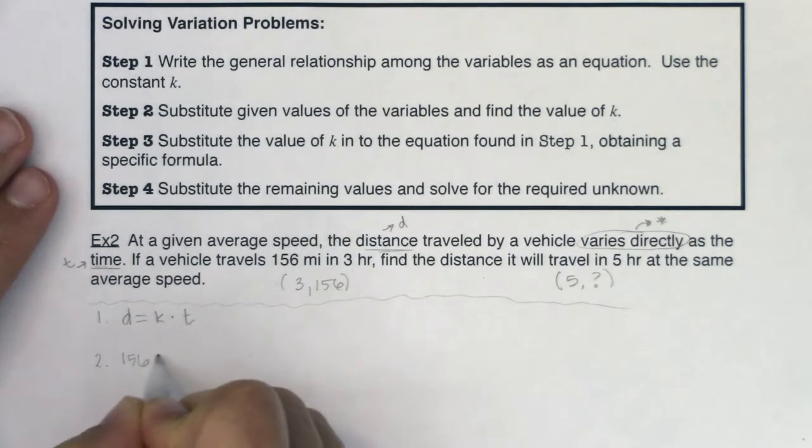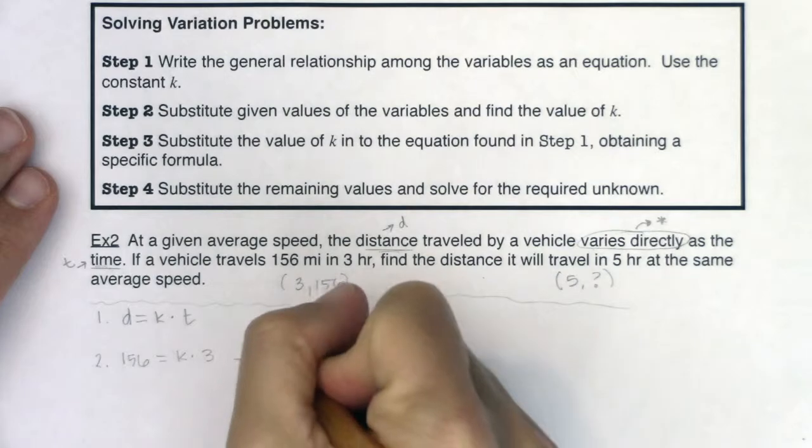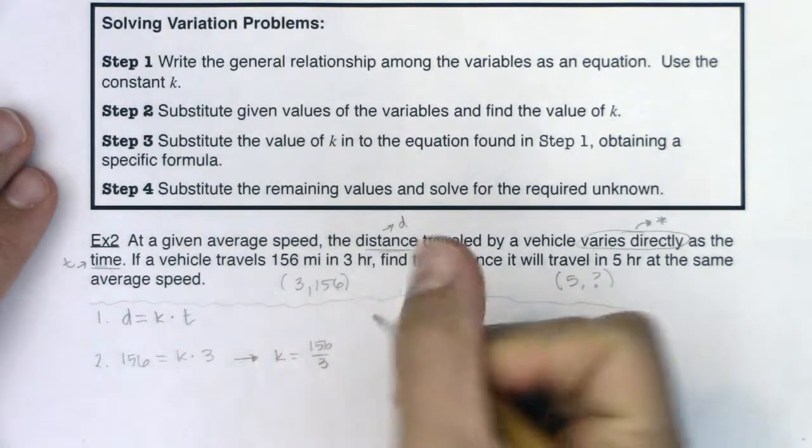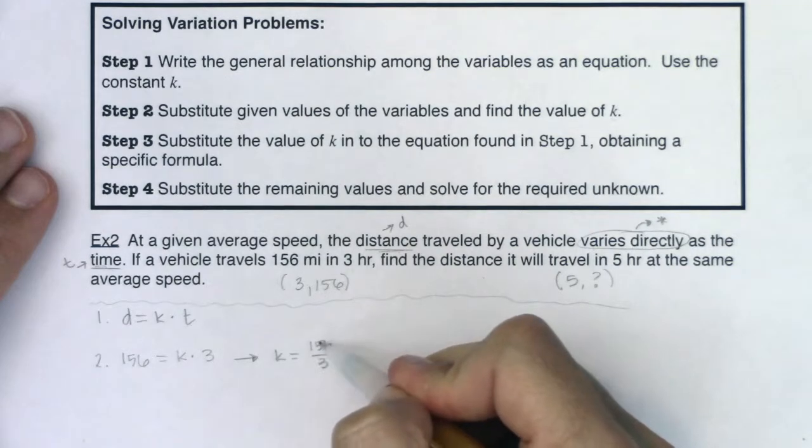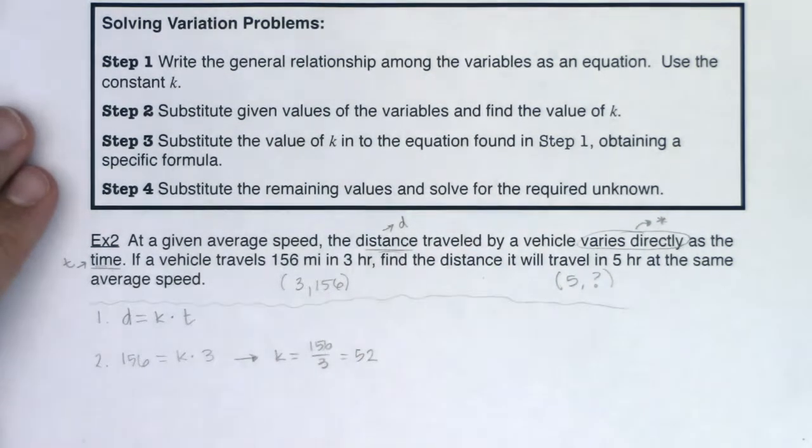So I'm going to put 156 in for distance. I'll put three in for time. I'm going to go ahead and divide 156 by three, so k will equal whatever 156 over three is. Oh, I can do this in my head. Three goes into 15 five times, three goes into six two times.